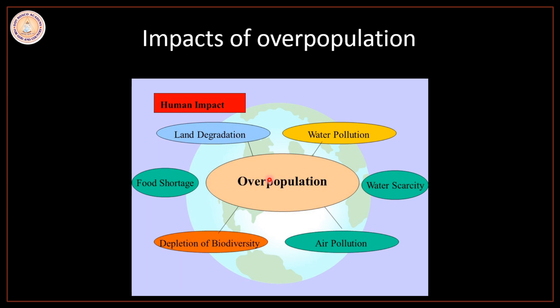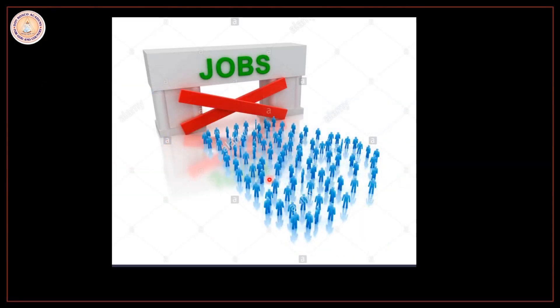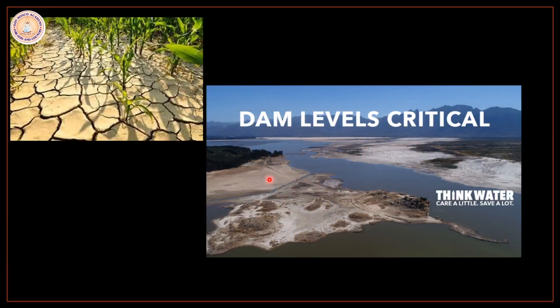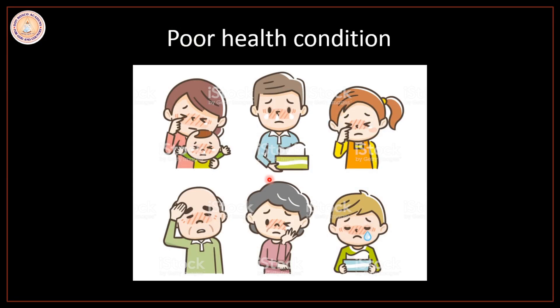Normally in an overpopulated country there is joblessness, some people are homeless, famine and lack of water and food are common occurrences as seen in many African nations. Due to lack of health care, many people suffer from health-related diseases, and hence the quality of life is very poor.